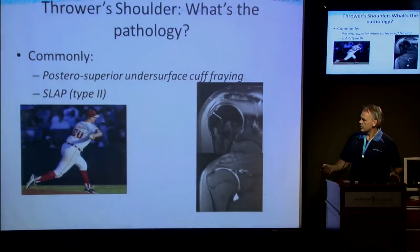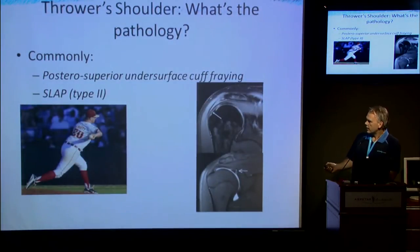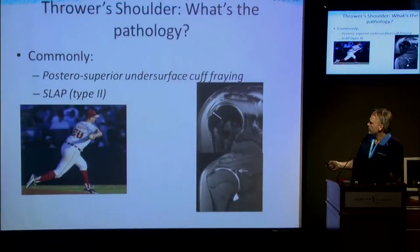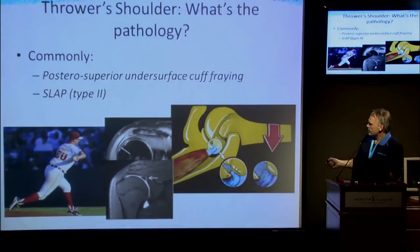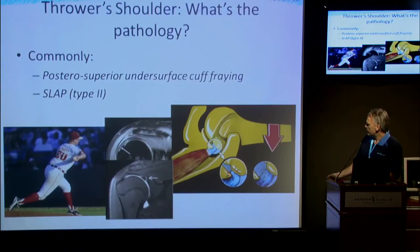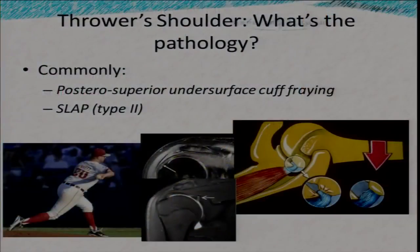The pathology we commonly see in the throwing shoulder is an undersurface posterior cuff tear associated with a type 2 SLAP lesion. This was originally described independently by Burkhart, Morgan, Kibler's group, and Gilles Valch in France, as associated with a posterior superior infolding of the cuff and potentially a compressive etiology of those cuff tears.